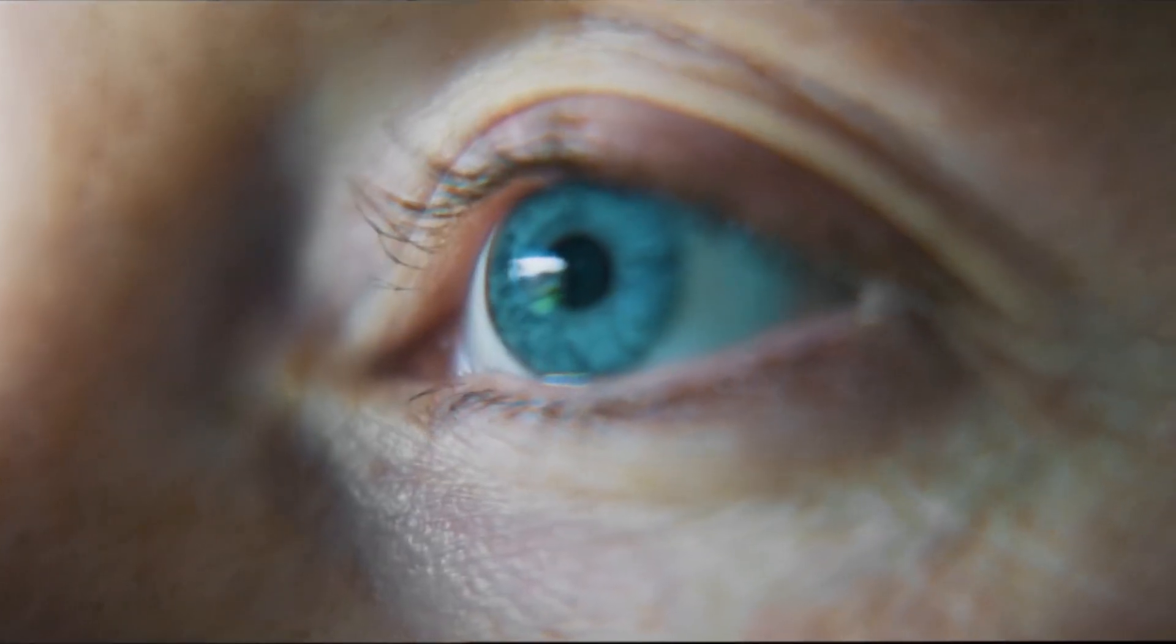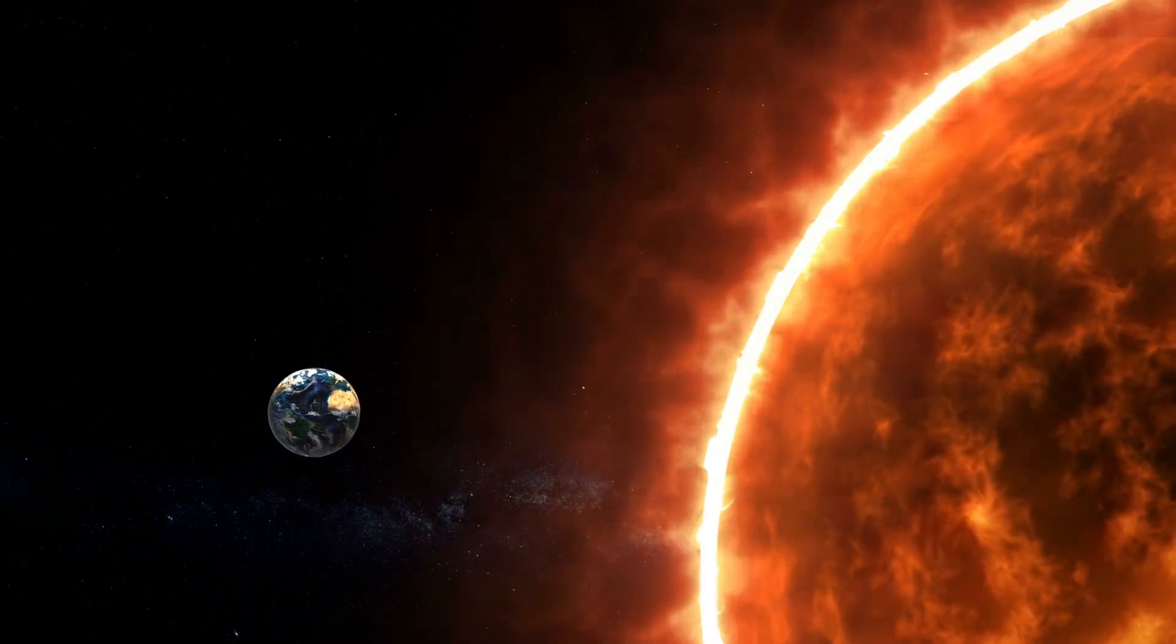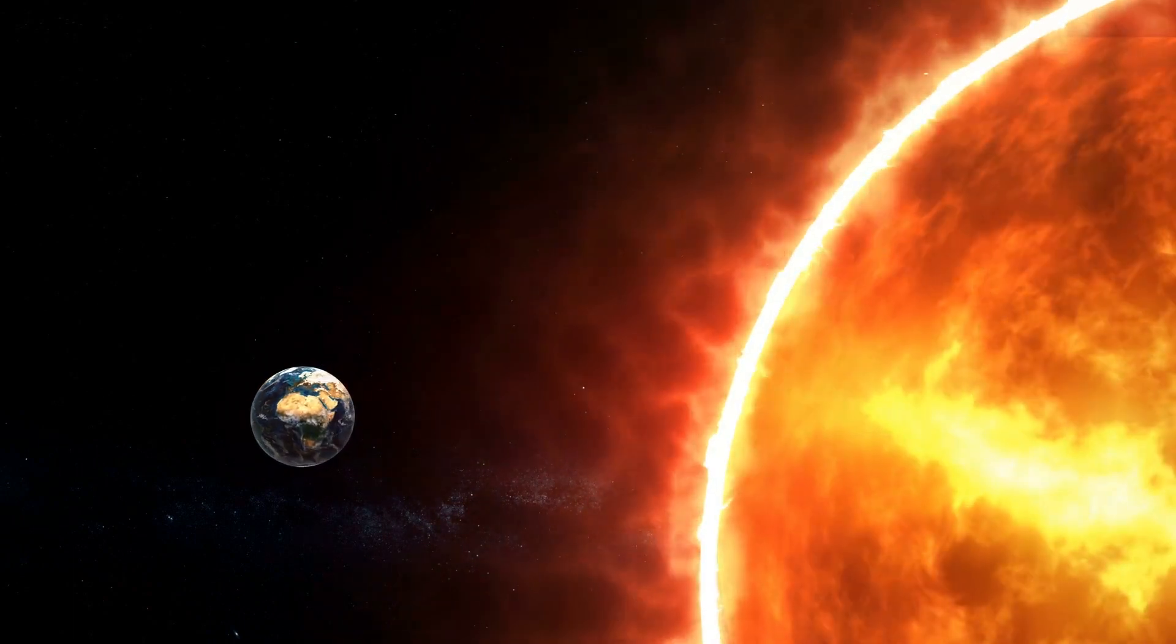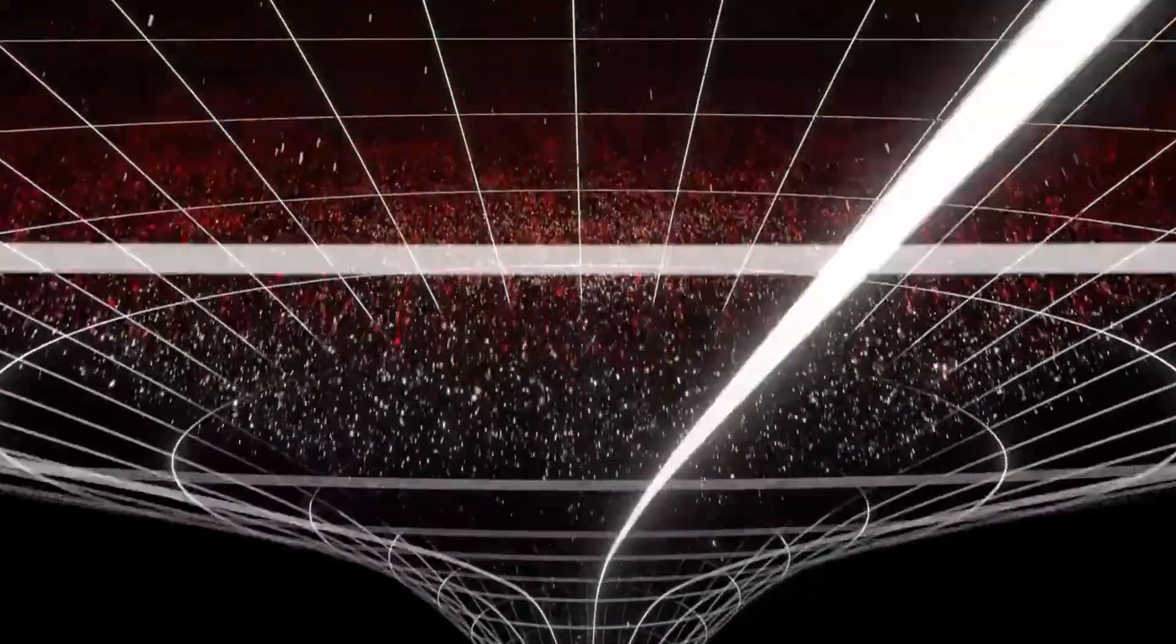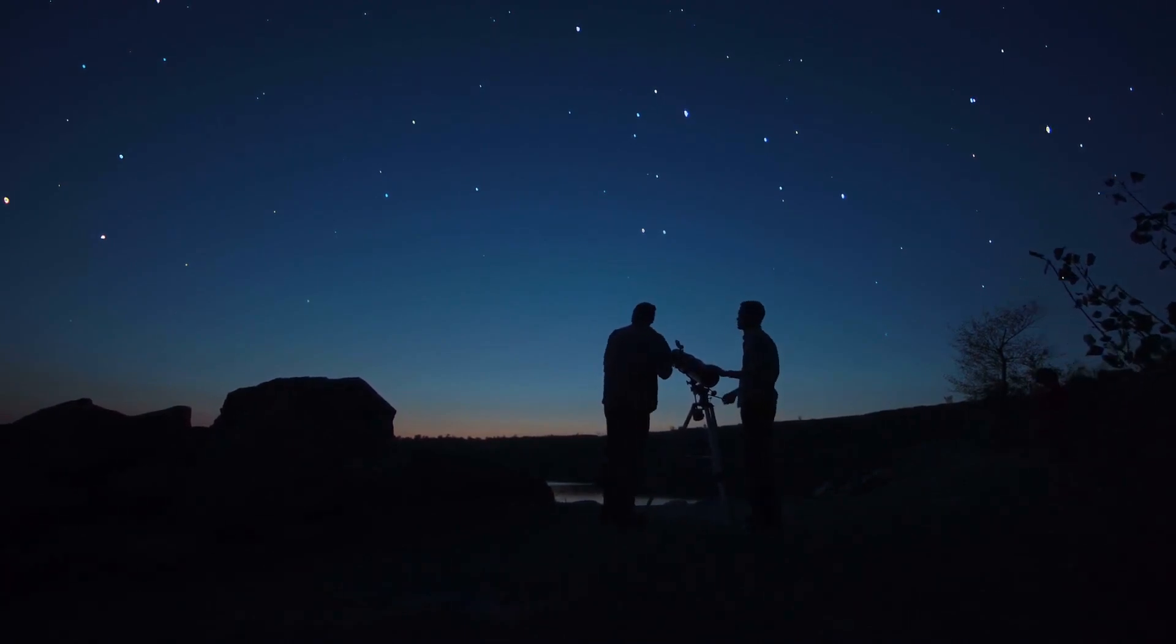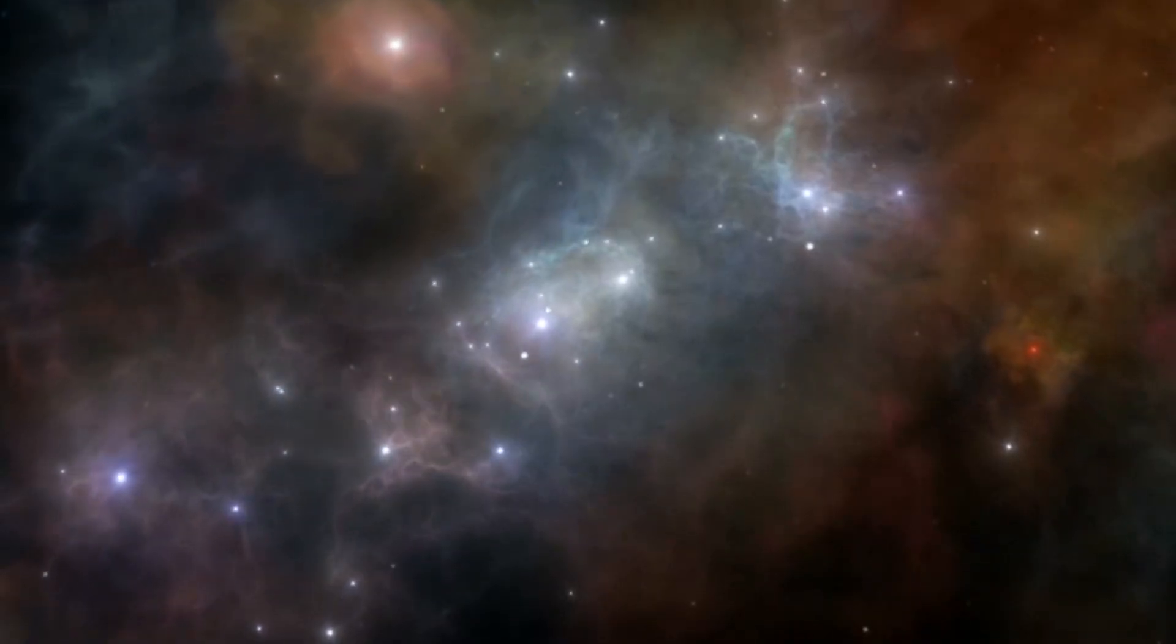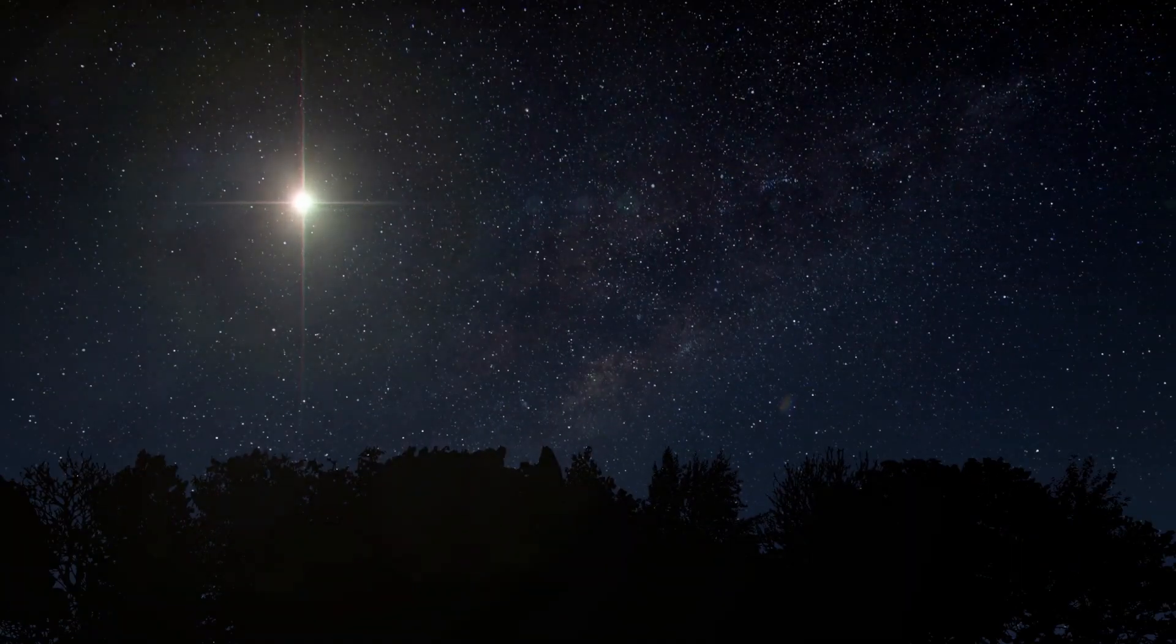That means when we look at the Sun, we aren't seeing a live image of what is actually happening on the Sun. We're actually seeing what was happening on the Sun around 8 minutes prior. Now take this idea and expand the scale so it applies across the universe. All stars emit light which we can see, but the farther away the star is, the older what we're seeing is. If you're looking at a very distant star, you're actually seeing what happened a very long time ago.